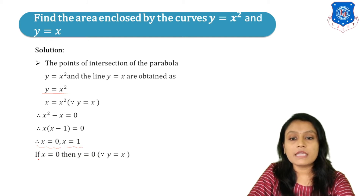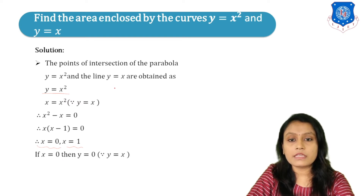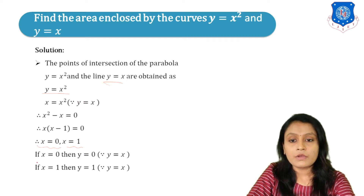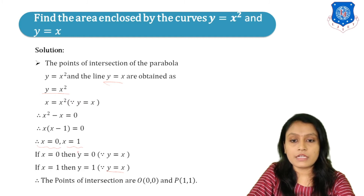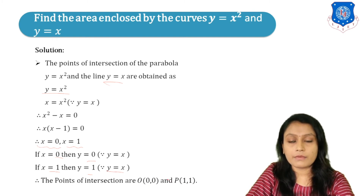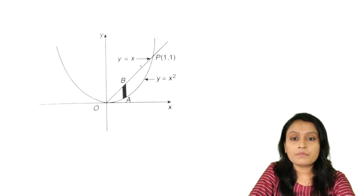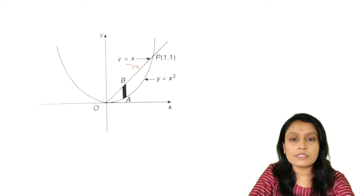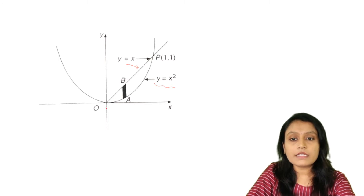Substituting X equals 0 into Y equals X gives Y equals 0, and substituting X equals 1 gives Y equals 1. So the points of intersection are (0,0) and (1,1). We draw the line Y equals X and the parabola Y equals X squared, with intersection points at (0,0) and (1,1).